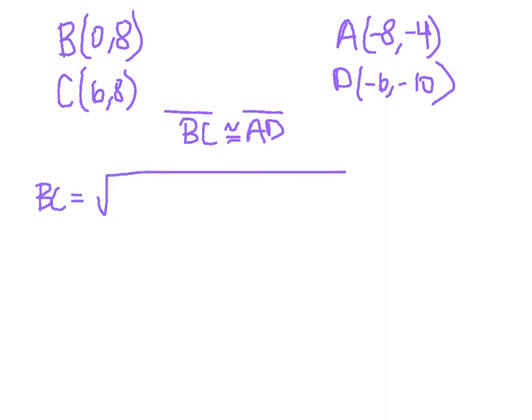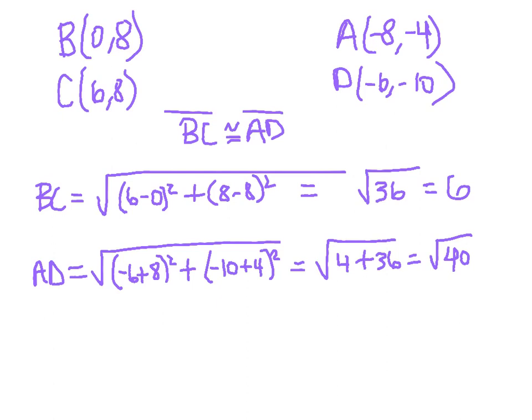So using B and C, go ahead, plug the numbers into the distance formula and see what you get. I'm going to pause the video and fill in the values. So hopefully you got an answer of 6 for BC. 6 minus 0 squared is 36, 8 minus 8 squared is 0, so you get the square root of 36 which is 6.